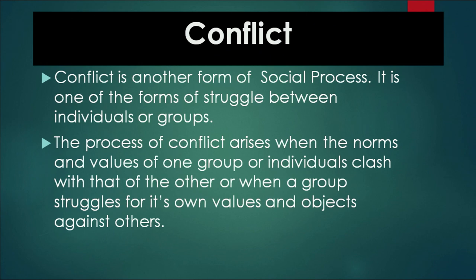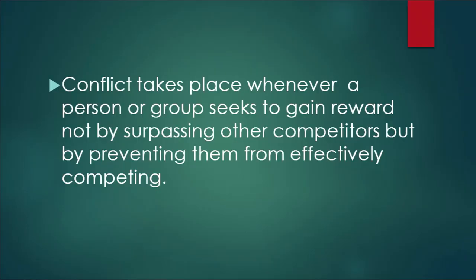Now let us discuss what is conflict. Conflict is another form of social process and one form of struggle between individuals or groups. The process of conflict arises when the norms and values of one group or individual clash with those of another, or when a group struggles for its own values and objects against others. Conflict is also universal, found in all societies as we find competition. Conflict takes place whenever a person or group seeks to gain reward not by surpassing other competitors but by preventing them from effectively competing. For example, people in sports may also file cases against one another.